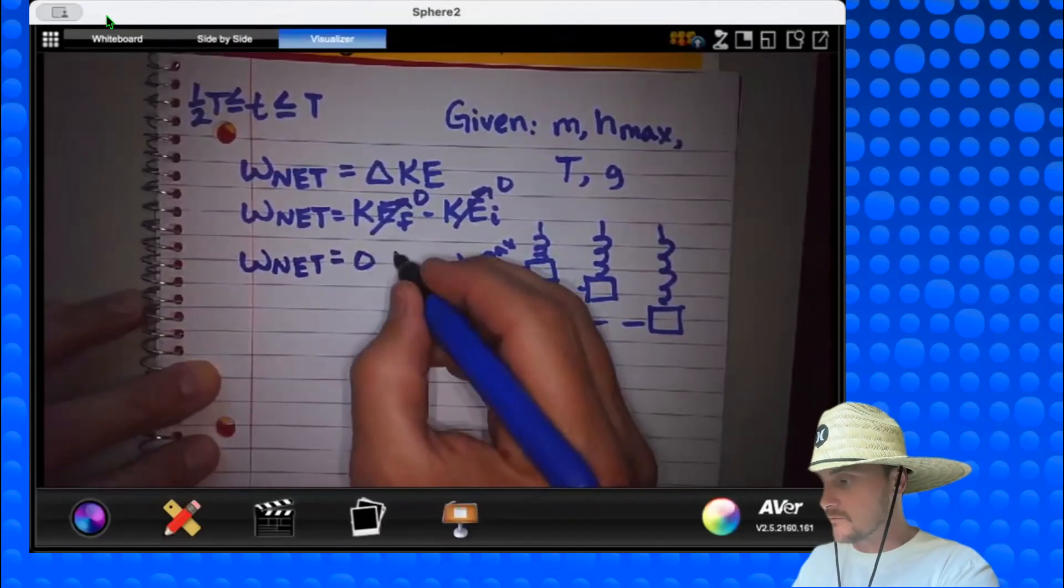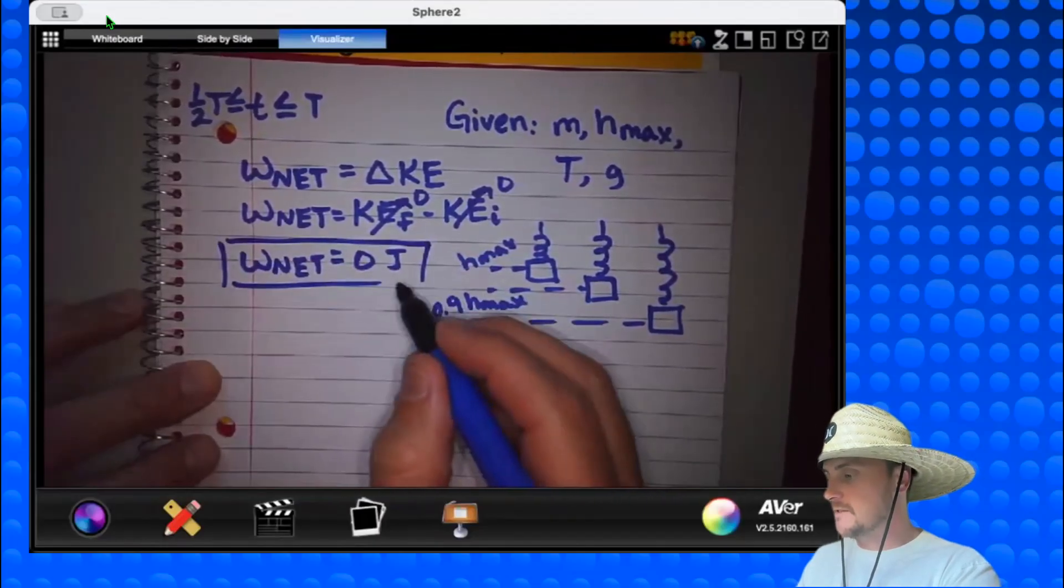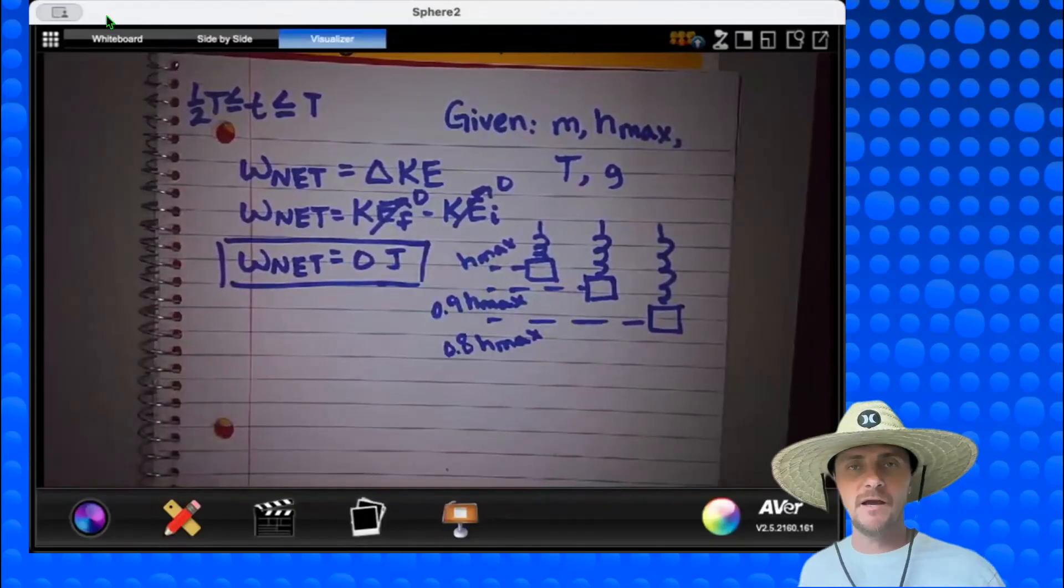So therefore, if work net is equal to the change in kinetic energy, which expands to kinetic energy final minus kinetic energy initial, and both of my kinetic energies are zero, then I simply have that work net is equal to zero minus zero, which is zero joules. And I can box that. You don't need to include the joule. It's just a habit for me.